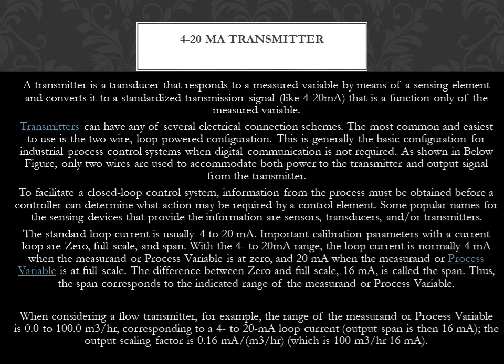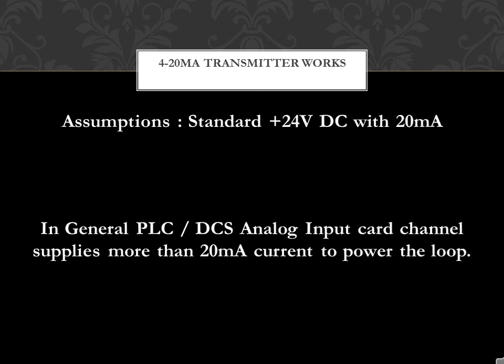The span corresponds to the indicated range of the measurand or process variable. When considering a flow transmitter, for example, the range of the measurand or process variable is 0.0 to 100.0 m³/hr, corresponding to a 4-20mA loop current. Output span is then 16mA. The output scaling factor is 0.16mA per m³/hr, which is 16mA divided by 100 m³/hr.